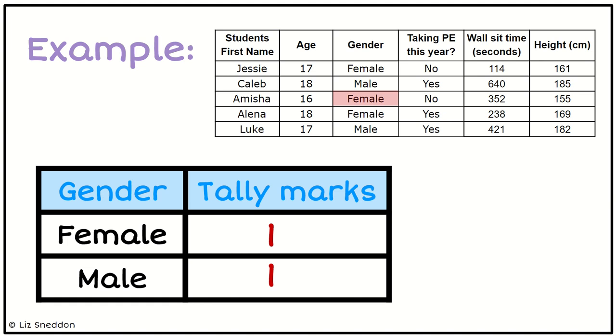Elena is female, so again I'll put that in the female. And Luke is a male, so I'll add that to the male tally mark. So that's what a tally chart would be.